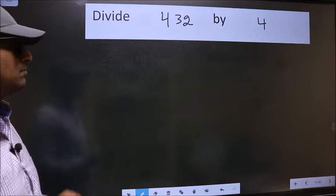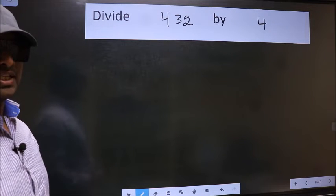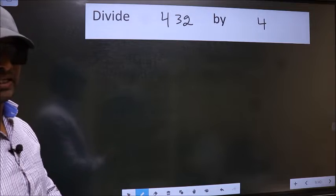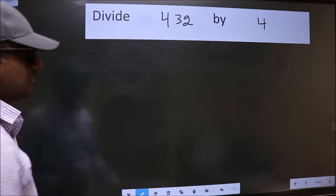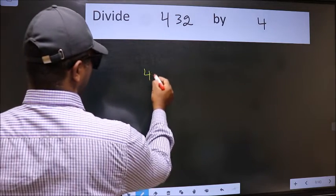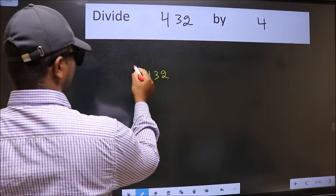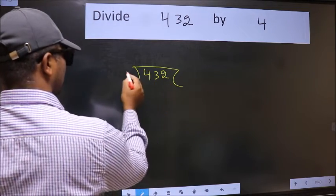Divide 432 by 4. To do this division, we should frame it in this way. 432 here, 4 here.